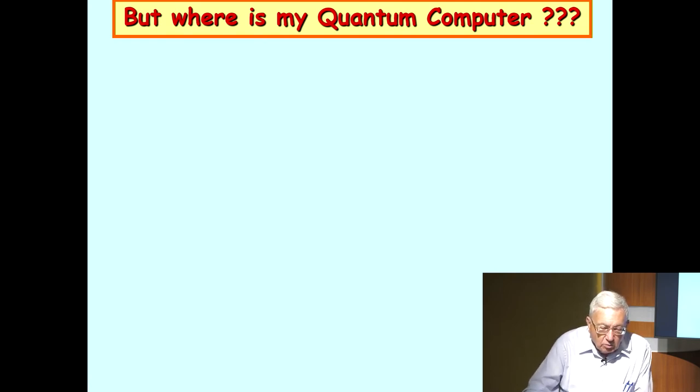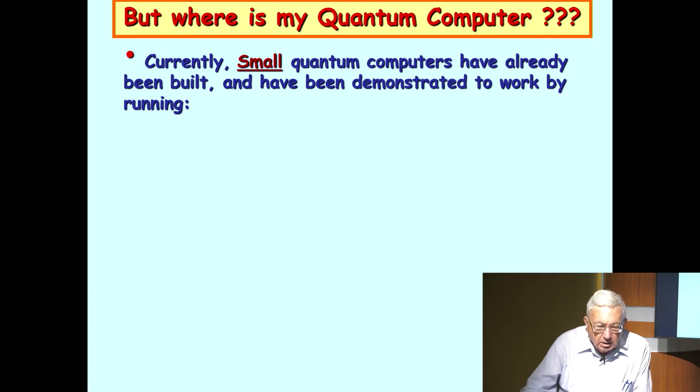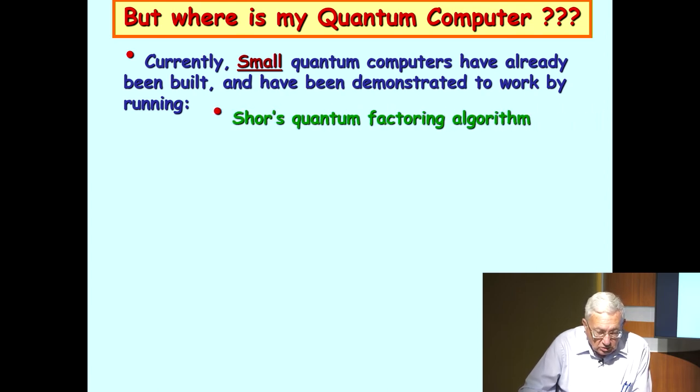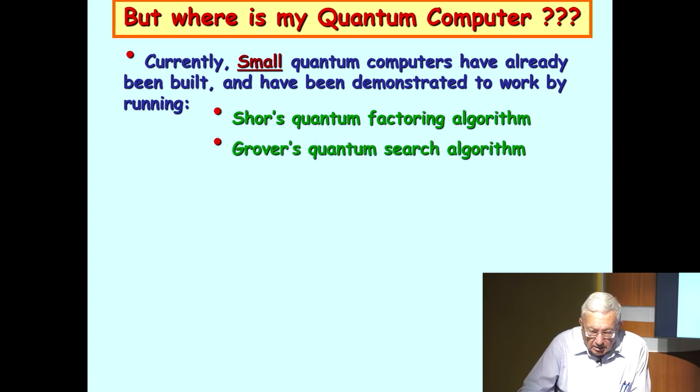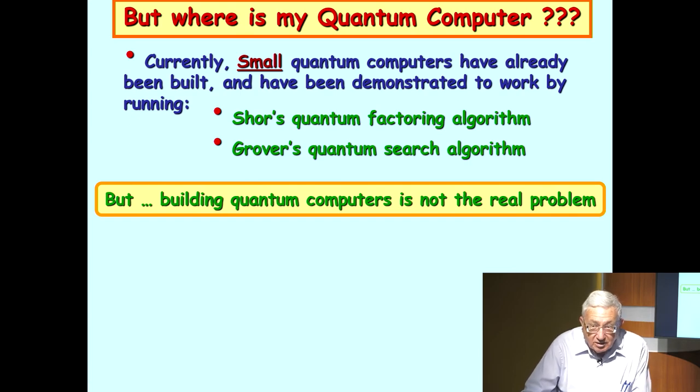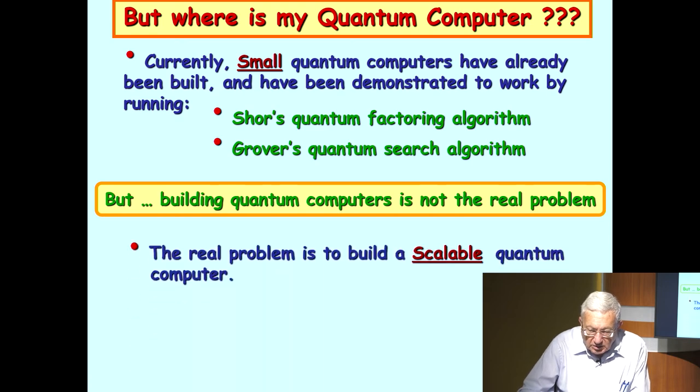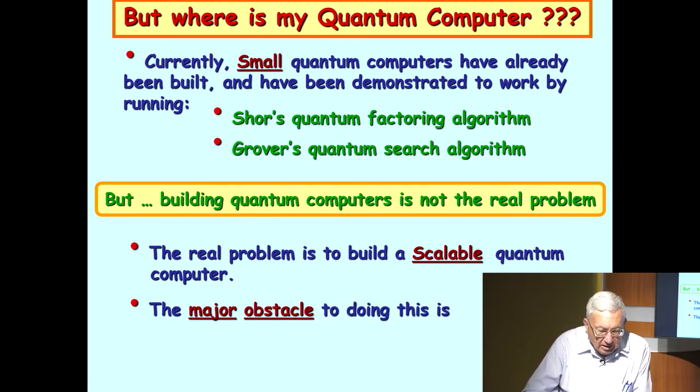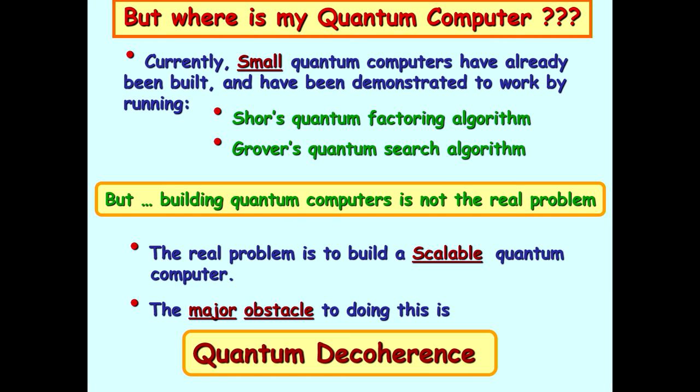But where is my quantum computer? I mean, I'm talking about quantum computers, and why can't you buy one at the local computer store? Currently, small quantum computers have already been built and have been demonstrated to work by running Shor's algorithm and Grover's algorithm. But building quantum computers is not the real problem in a certain sense. The real problem is to build a quantum computer that is scalable. And a major obstacle to doing this is what we will call decoherence. This is the major problem. I should mention that we factored, in Shor's algorithm, we've actually factored 21, I believe, maybe also 15, very small integers, nowhere near factoring big numbers.